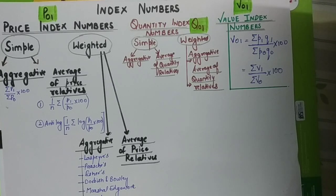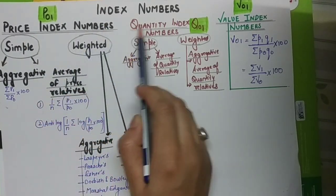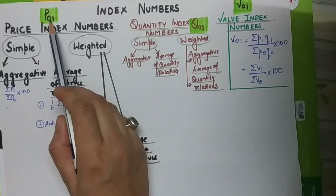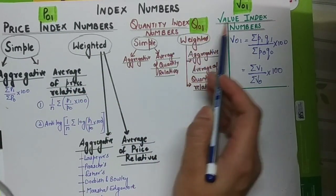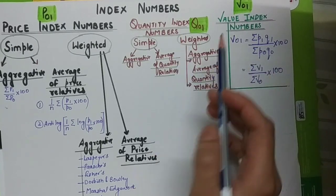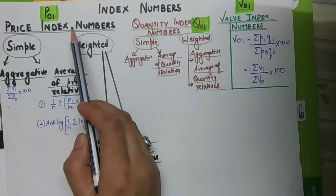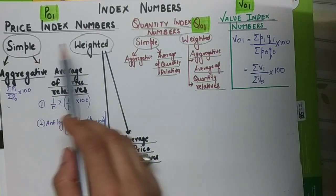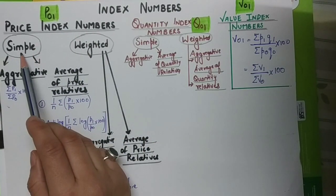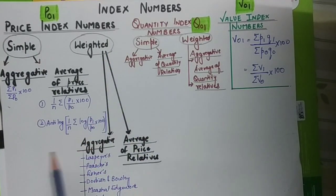In my previous video, I explained that index numbers are of three types: price index number denoted by P01, quantity index number denoted by Q01, and value index number denoted by V01. Here 0 indicates the base year and 1 indicates the current year. A price index number can be constructed using two different methods: a simple method and a weighted method, in which we assign weights to different commodities within a group.